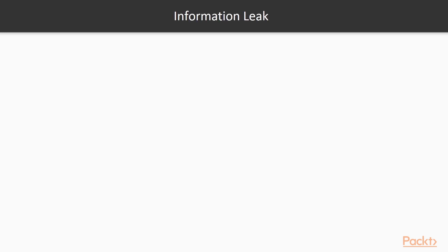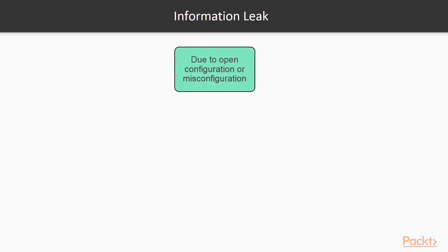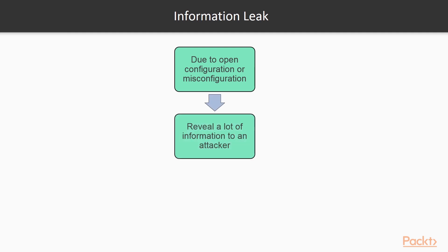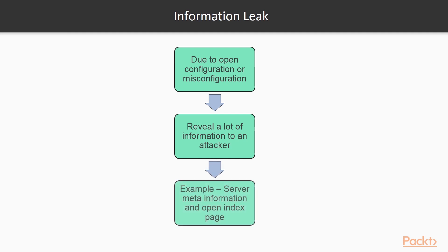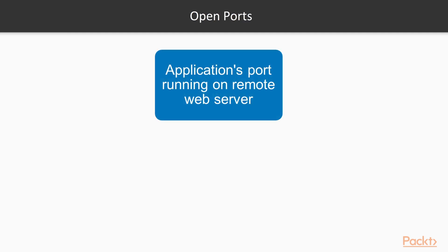After that is information leak — many web server systems, mostly due to open configuration, misconfiguration, or lack of input validation, can reveal a lot of information about themselves to an attacker. Examples include server meta-information on an index page and open ports.